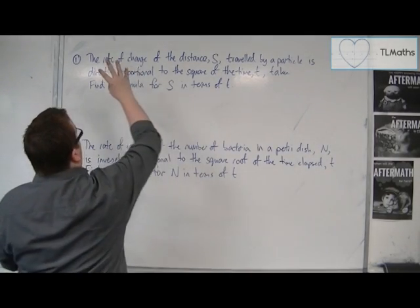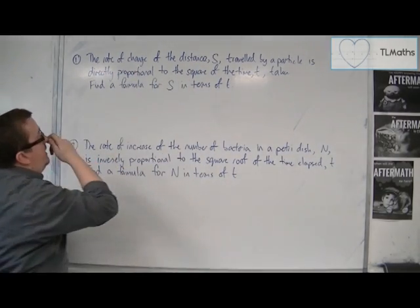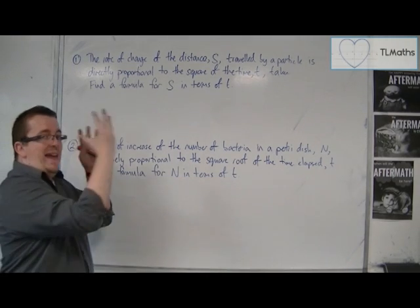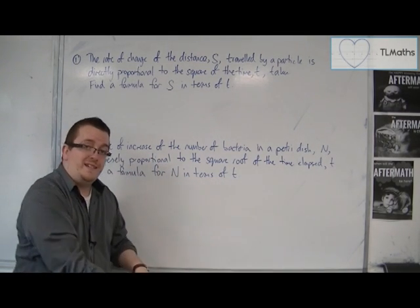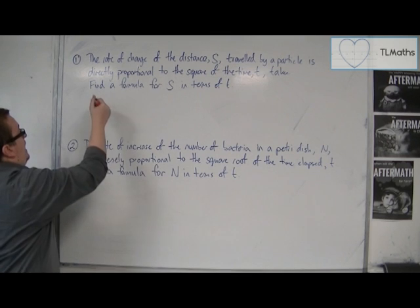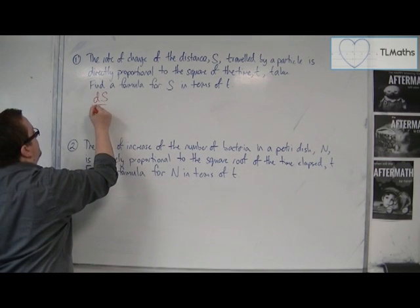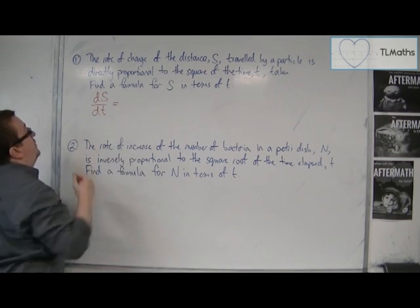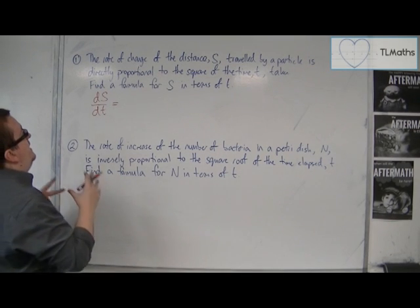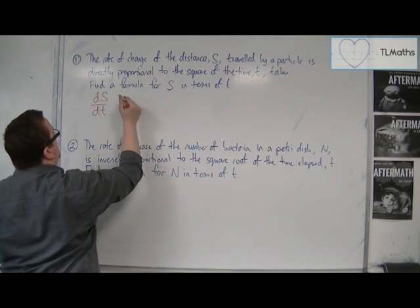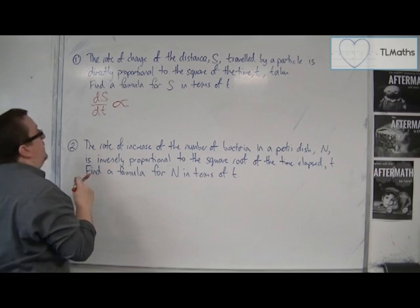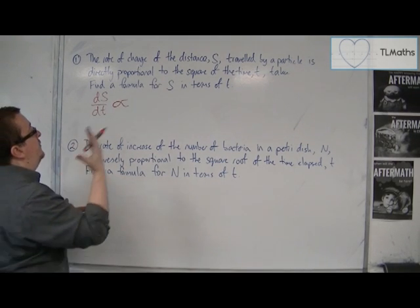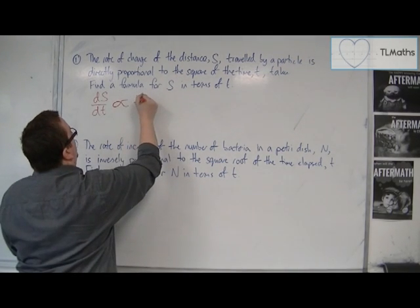The rate of change of the distance is talking about how s is changing with respect to time. So that's ds/dt. And we're told that is directly proportional, so we could write the proportionality symbol, to the square of the time taken t.